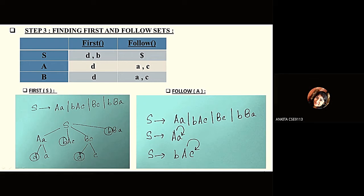Step 1 was expanding the grammar and step 2 was augmenting the grammar. Now comes step 3: finding the First and Follow sets. We find the First and Follow sets for the respective variables in the grammar. The variables here are S, A, and B.